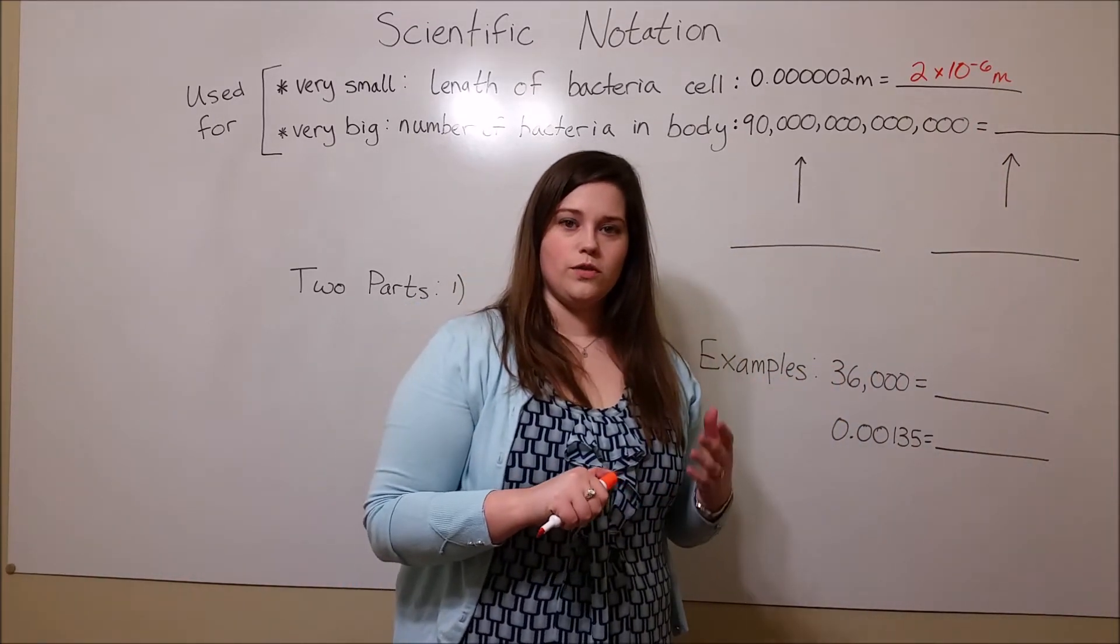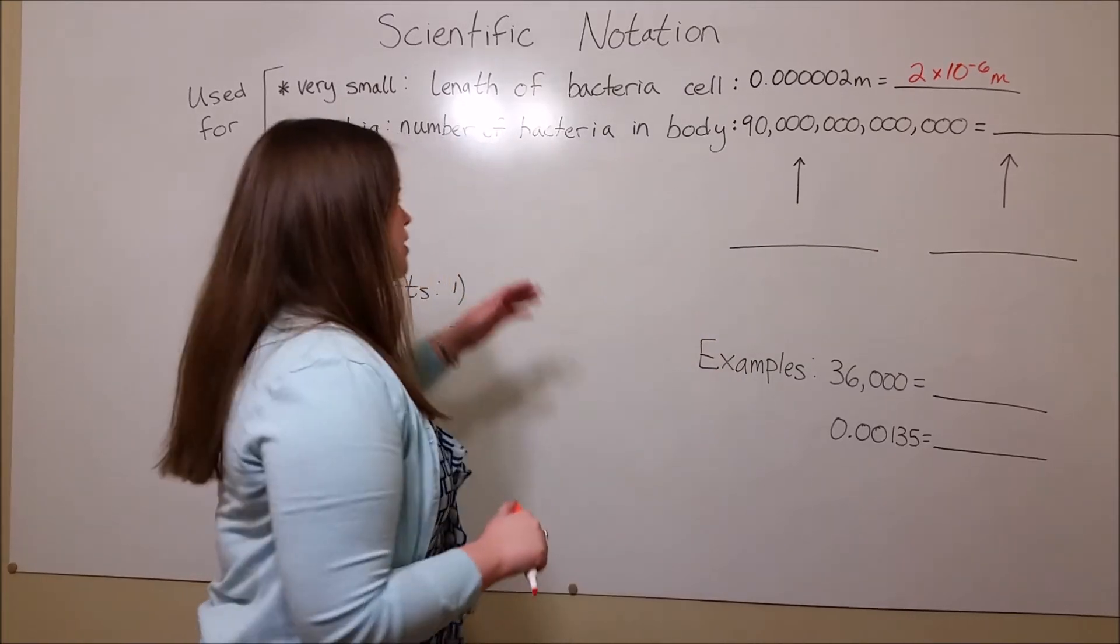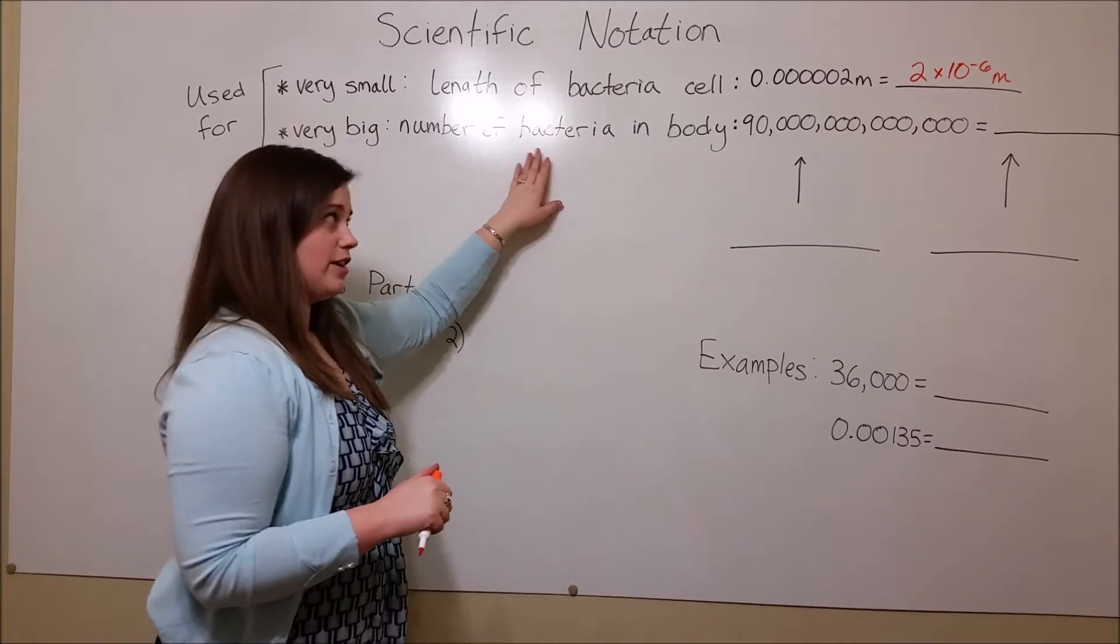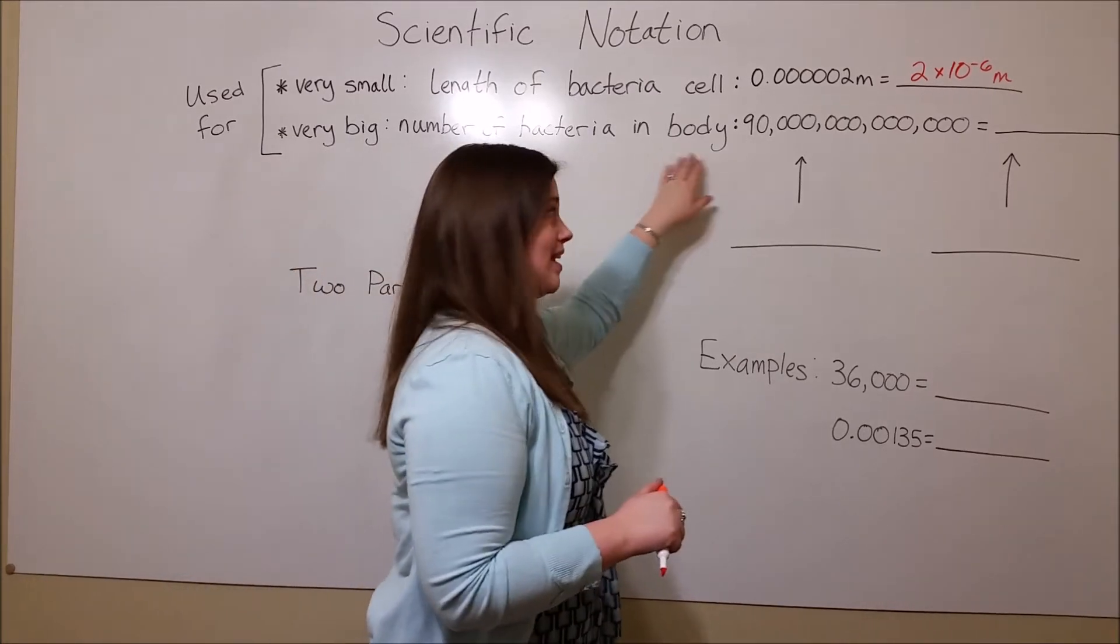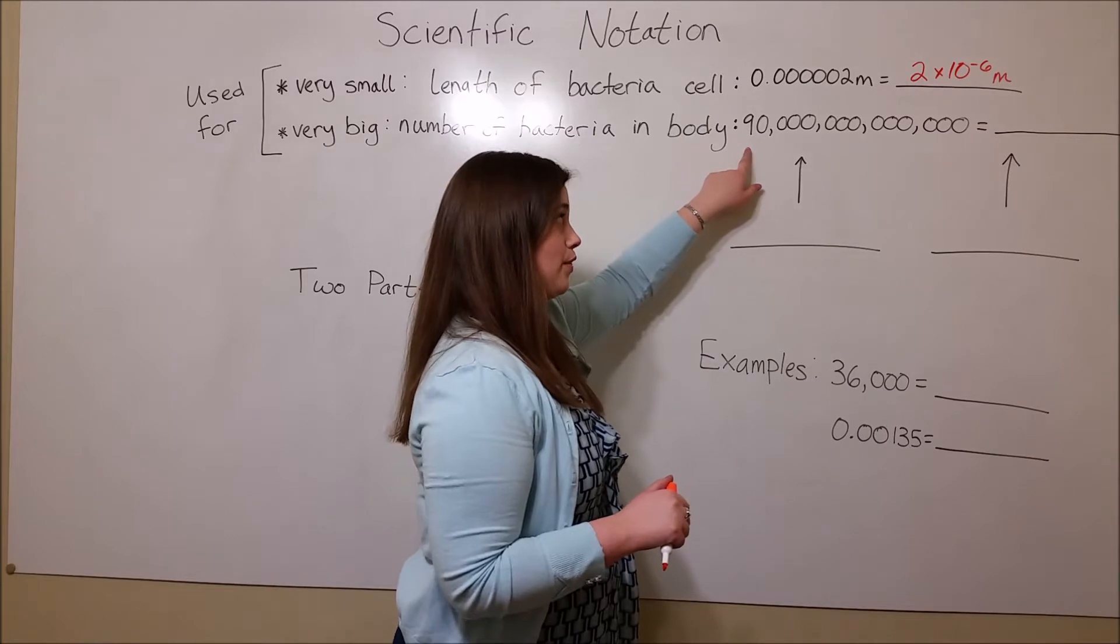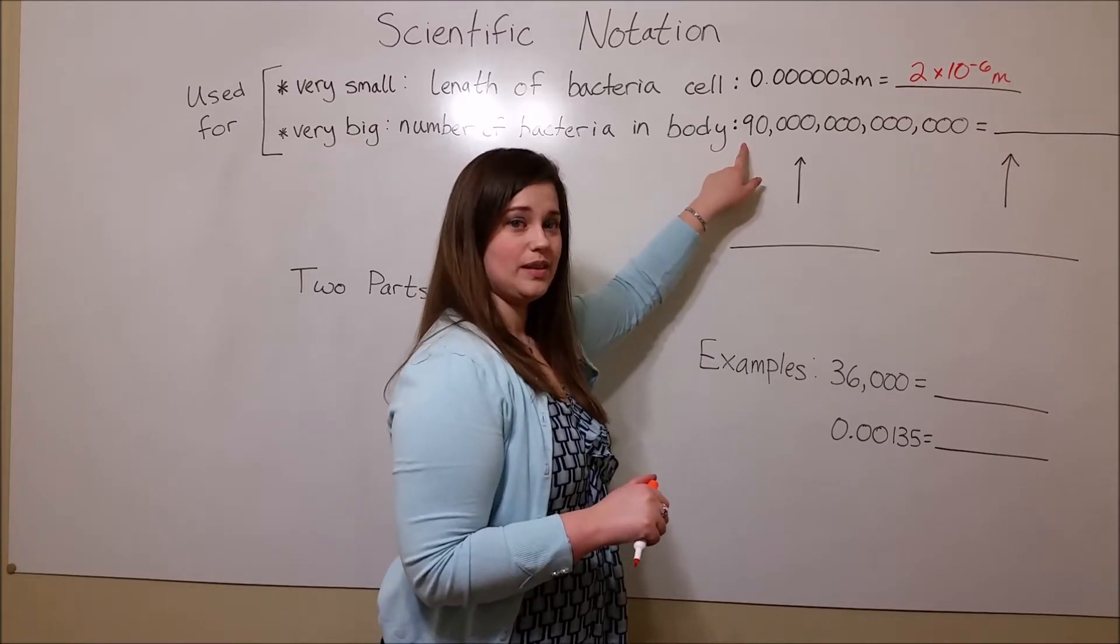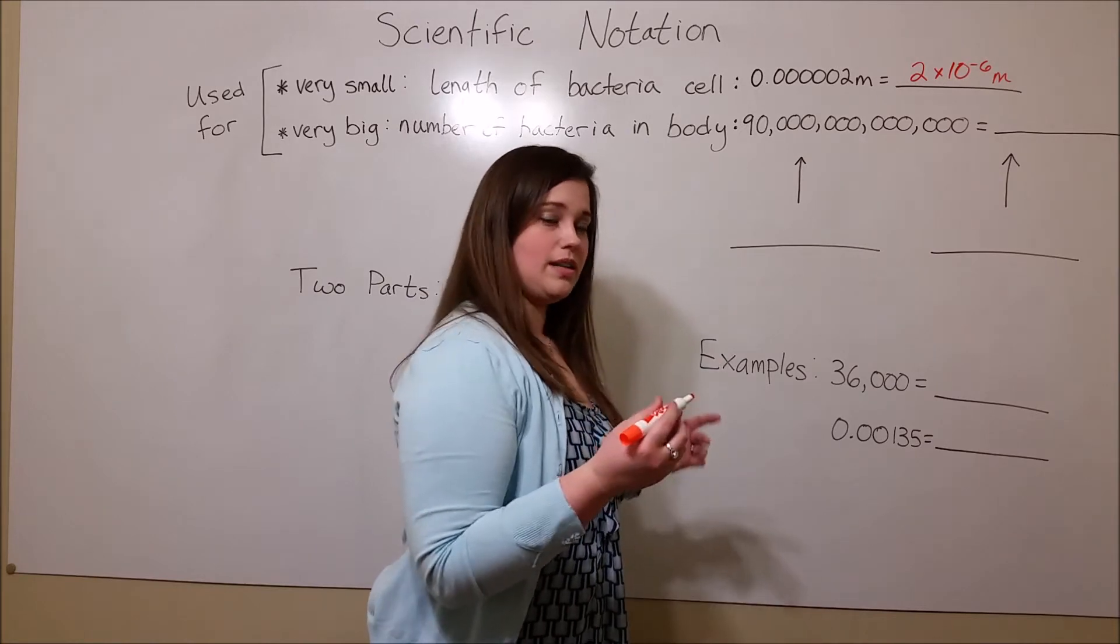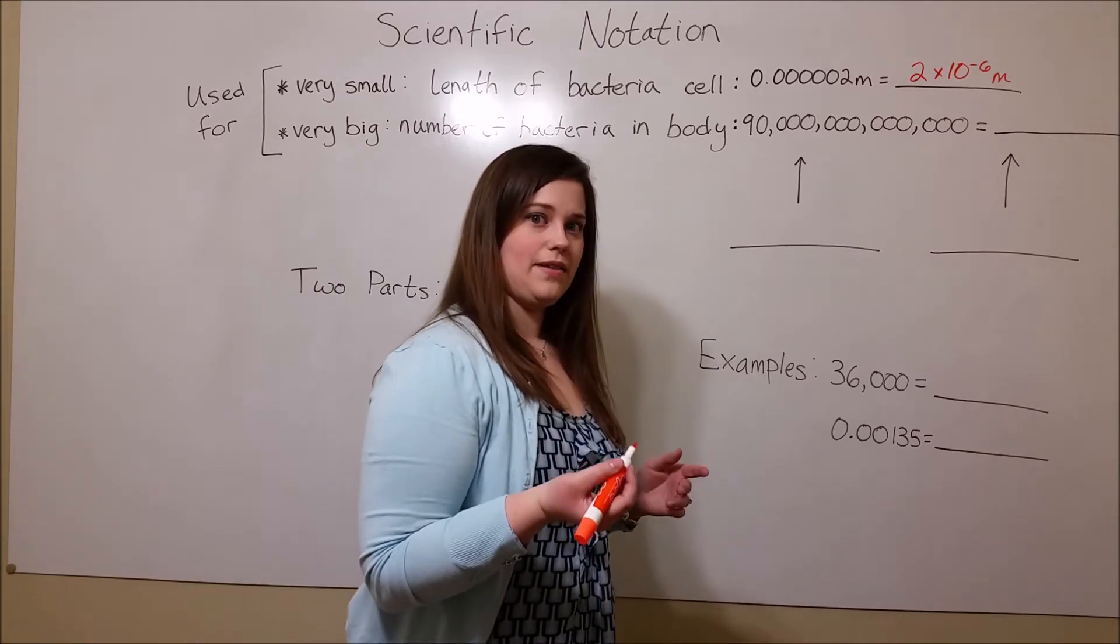Scientific notation is also used for very big numbers. For example, the number of bacteria, on average, in the human body is 90 trillion. That is 13 zeros. So instead of having to write out all of these zeros, one can simply write this number in scientific notation.